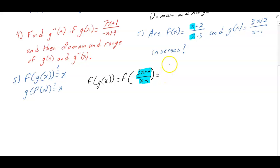So then it's going to become 3x plus 2 over x minus 1 plus 2 divide by 3x plus 2 over x minus 1 minus 3 and here I'm going to multiply by x minus 1 over x minus 1 and when I distribute I get 3x plus 2 plus 2 times x minus 1 divide by 3x plus 2 minus 3 times x minus 1.